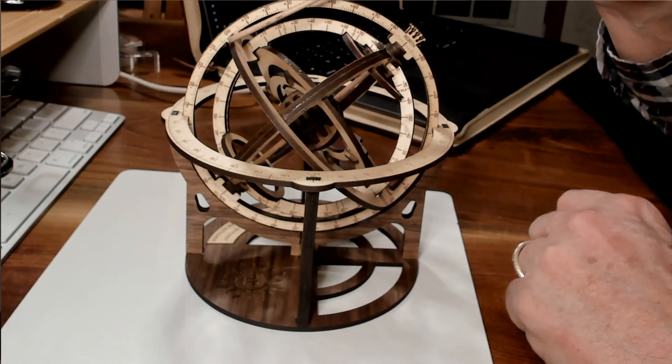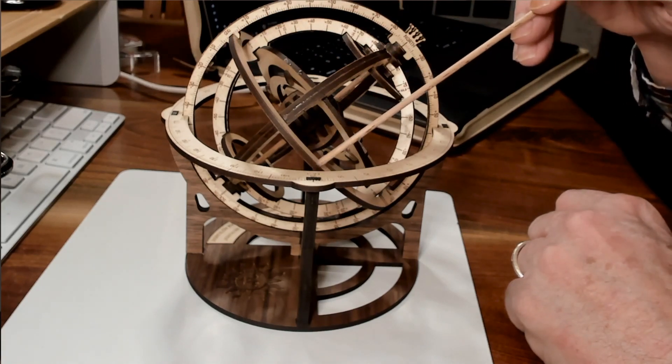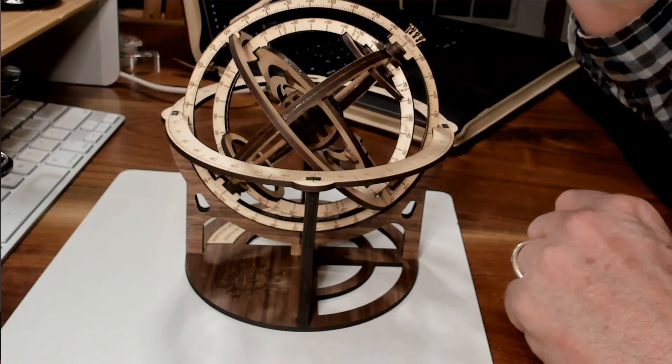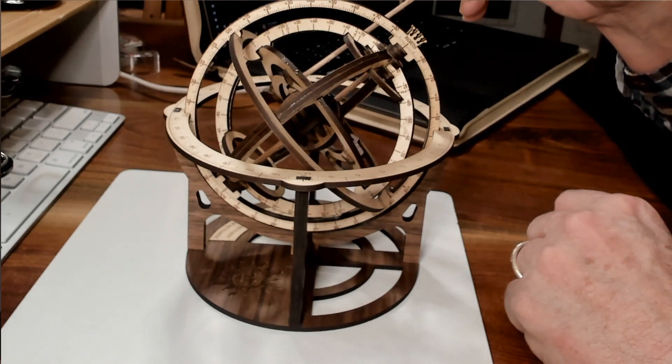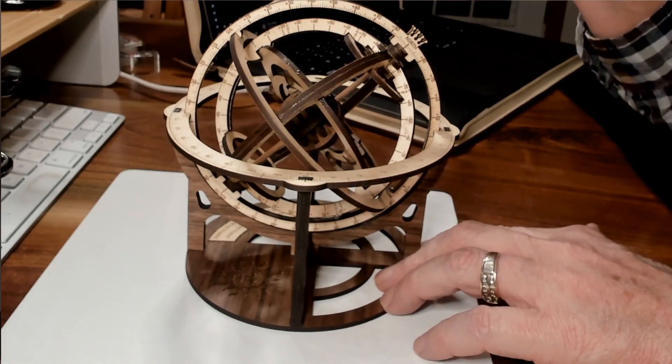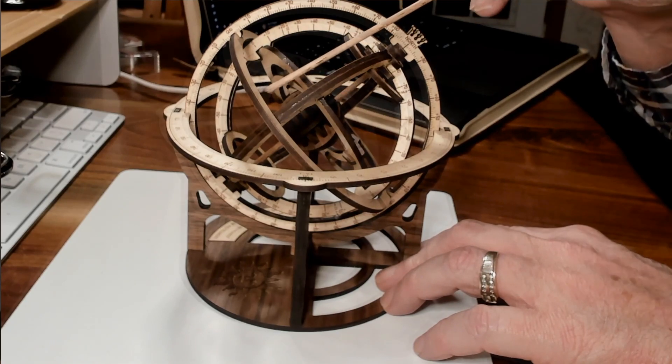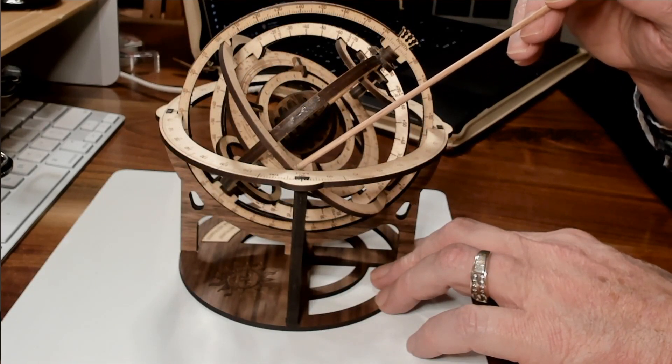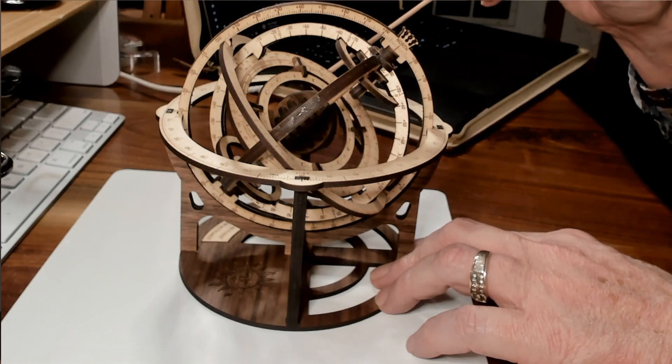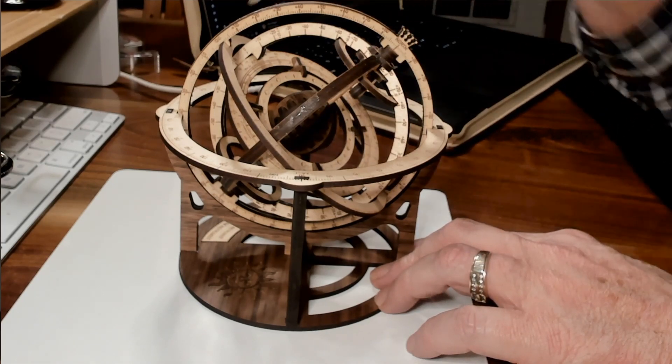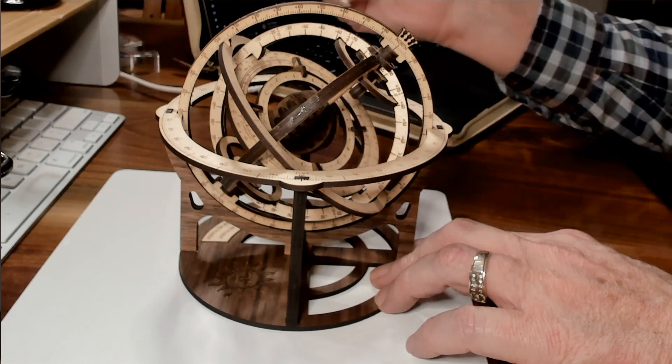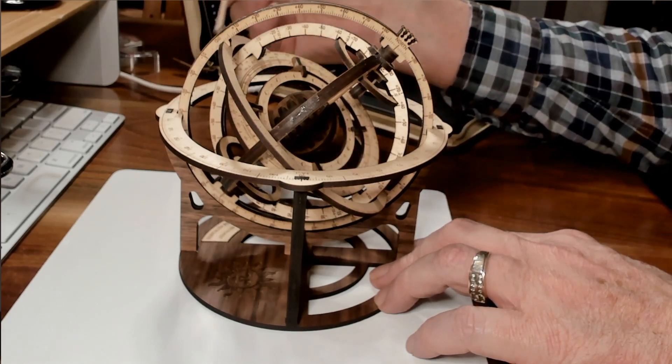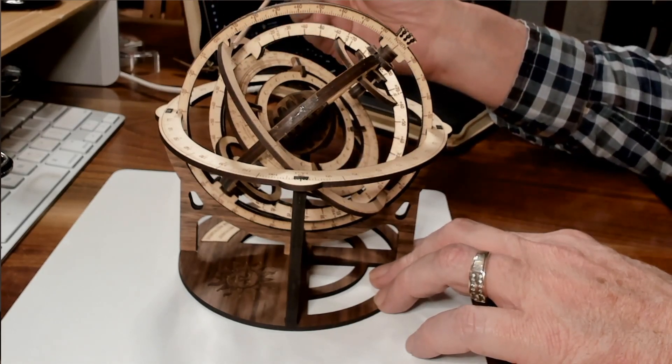This ring right here is the equator of the Earth. This is the equatorial ring of the Earth and the hour line. This part of the hour line would be approximately 6 a.m., 6 p.m. would be opposite, and up top where our meridian ring is, this point right here would be noon.